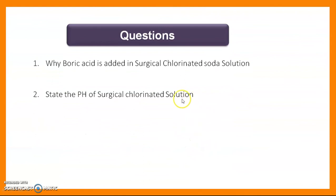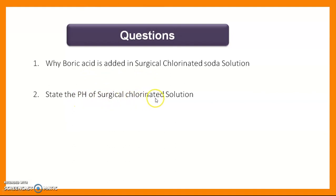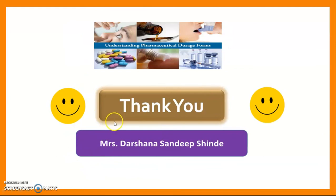Questions regarding this experiment: First — Why is boric acid added in chlorinated soda solution? Answer: Boric acid neutralizes the alkaline solution, making it safe for tissue use. Second — State the pH of surgical chlorinated soda solution. Answer: The pH should be maintained at an alkaline level of approximately 9.4 to 9.5. This concludes experiment number 14 — Surgical Chlorinated Soda Solution. Thank you very much for attending this practical session.